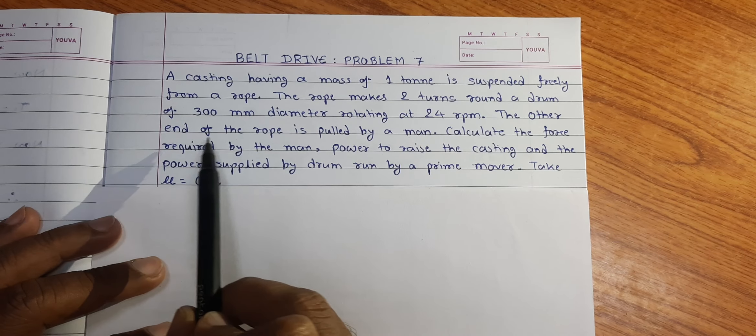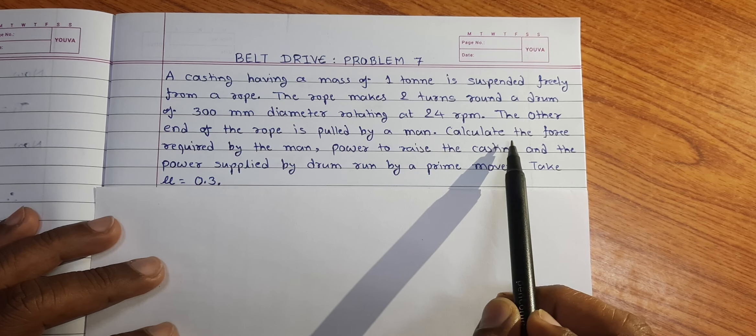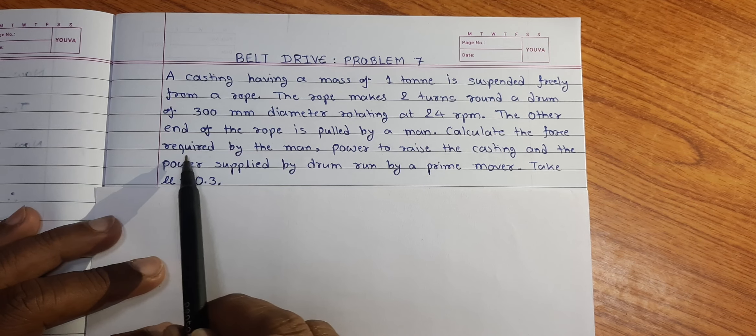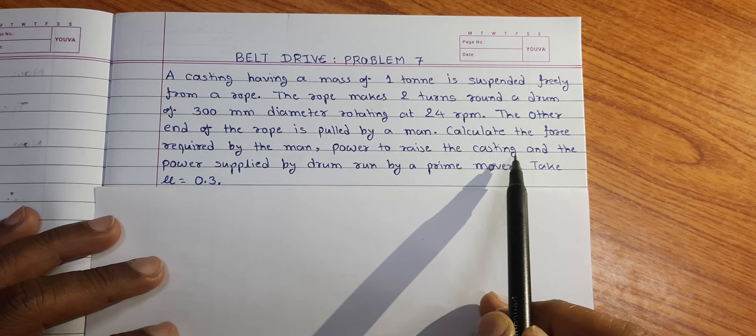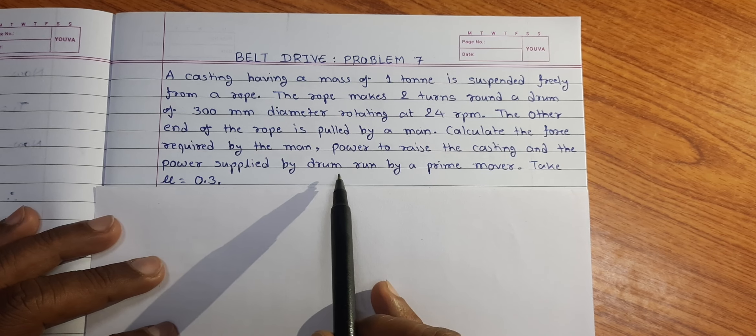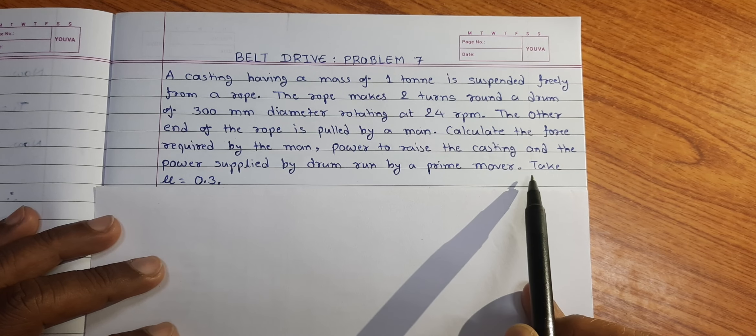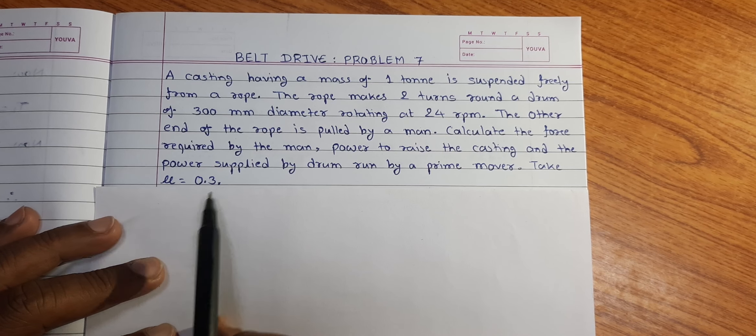The other end of the rope is pulled by man. Calculate the force required by the man, power to raise the casting and the power supplied by drum run by a prime mover, take mu is equal to 0.3.